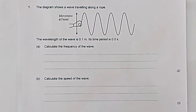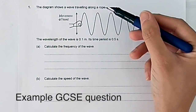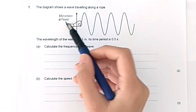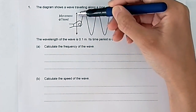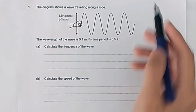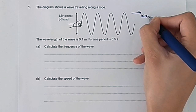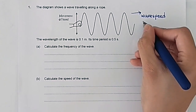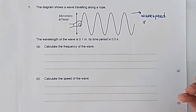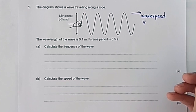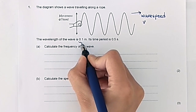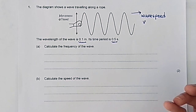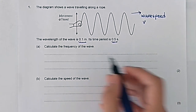Let's look at an example question that you might get in your GCSE exam. The diagram shows a wave traveling along a rope — that's a transverse wave as well. The wavelength is given as 0.1 meters, the time period is 0.5 seconds, and we want to calculate the frequency.